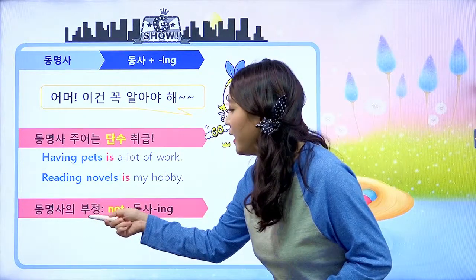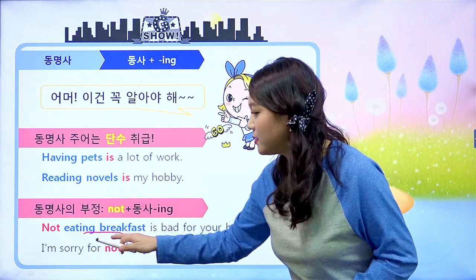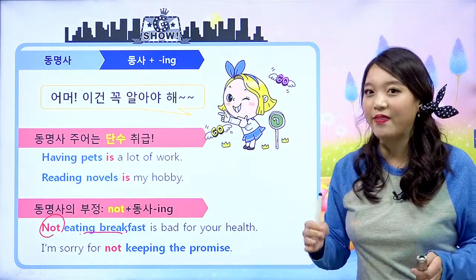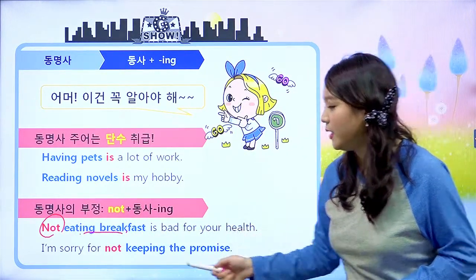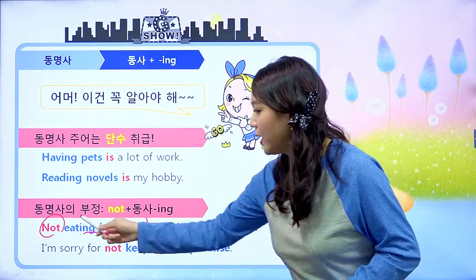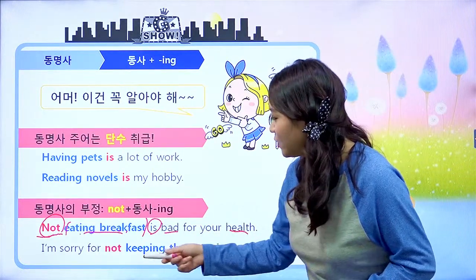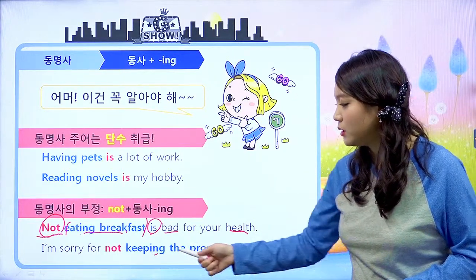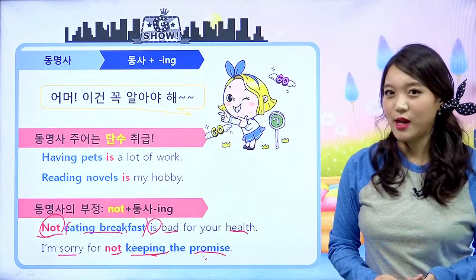동명사의 부정은 동명사 앞에다가 not을 붙이면 됩니다. Eating breakfast는 아침 식사하는 것인데, 앞에 not을 붙이면 아침 식사를 하지 않는 것이 됩니다. Not eating breakfast is bad for your health — 아침 식사를 하지 않는 것은 건강에 나쁘다 라는 문장이에요. 여기서 포인트 두 가지: 동명사의 부정은 앞에 not을 붙이고, 동명사 주어는 단수 취급합니다. I'm sorry for not keeping the promise — 약속을 지키지 않아서 미안해 라는 뜻이 됩니다.